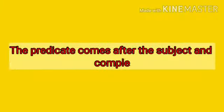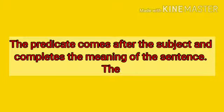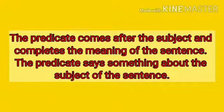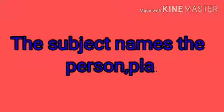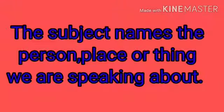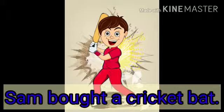The predicate comes after the subject and completes the meaning of the sentence. The predicate says something about the subject of the sentence. The subject names the person, place, or thing we are speaking about. Now see an example.